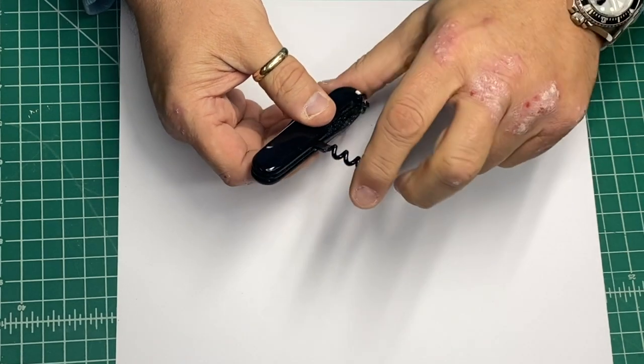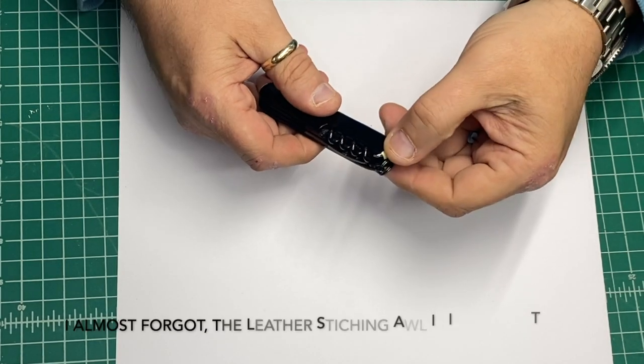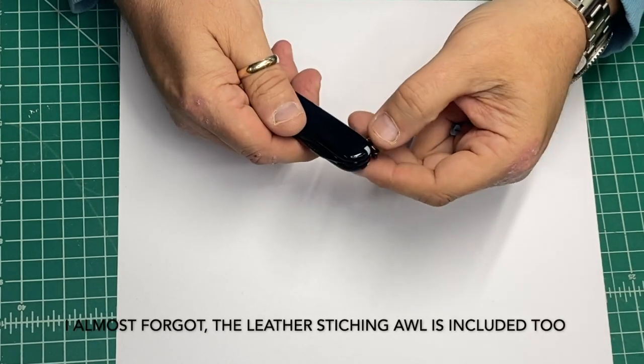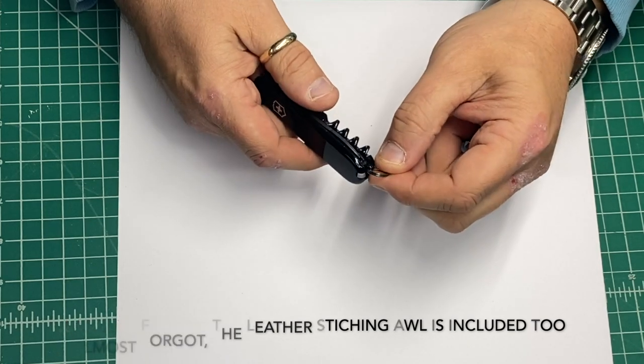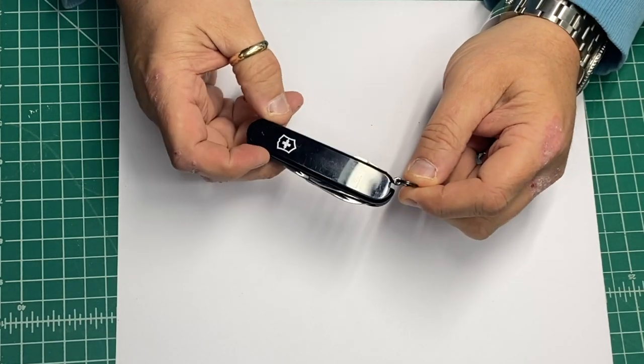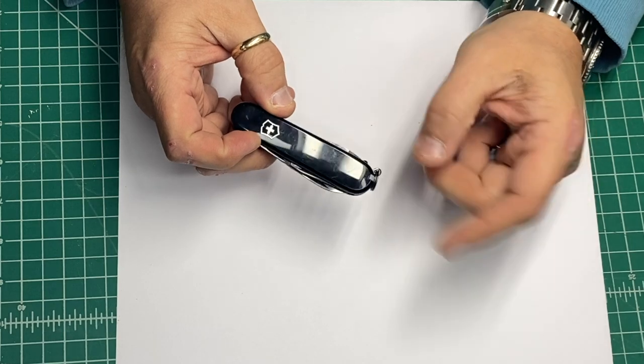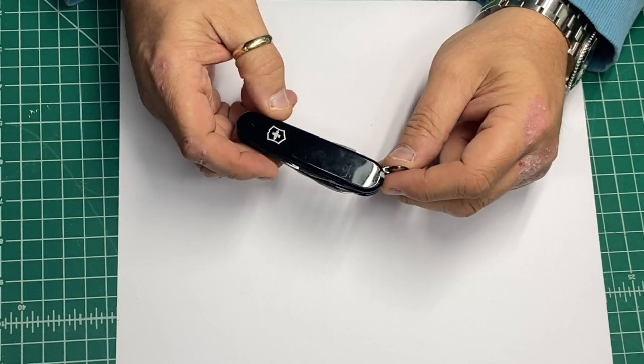Toothpick and tweezers with the loop for a lanyard. It came with a nylon lanyard. I didn't like it, so I took it off.